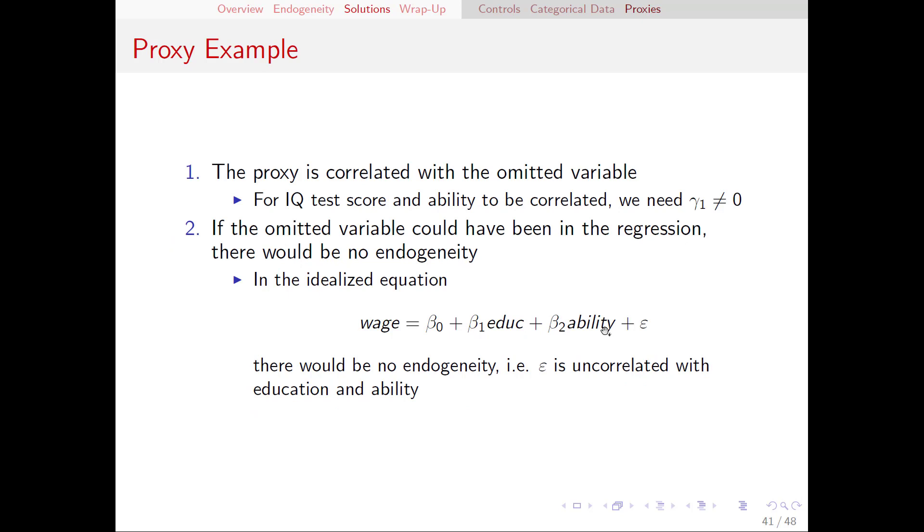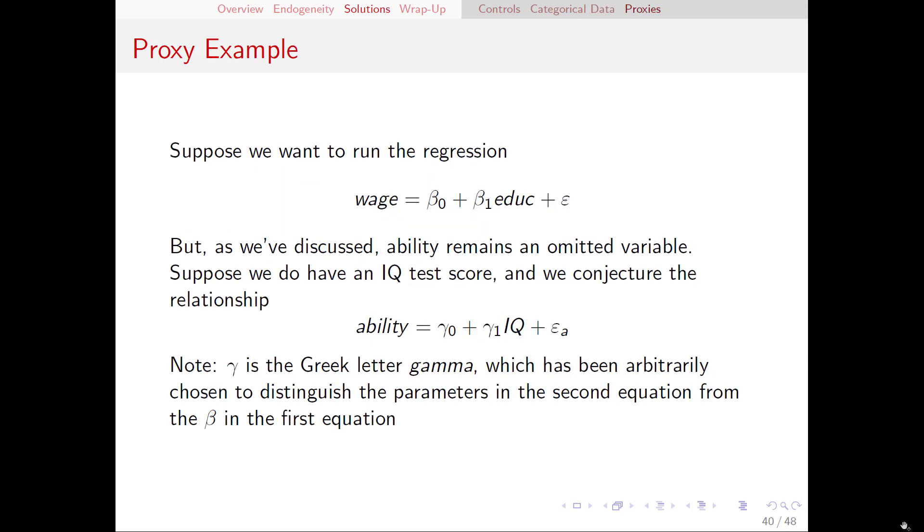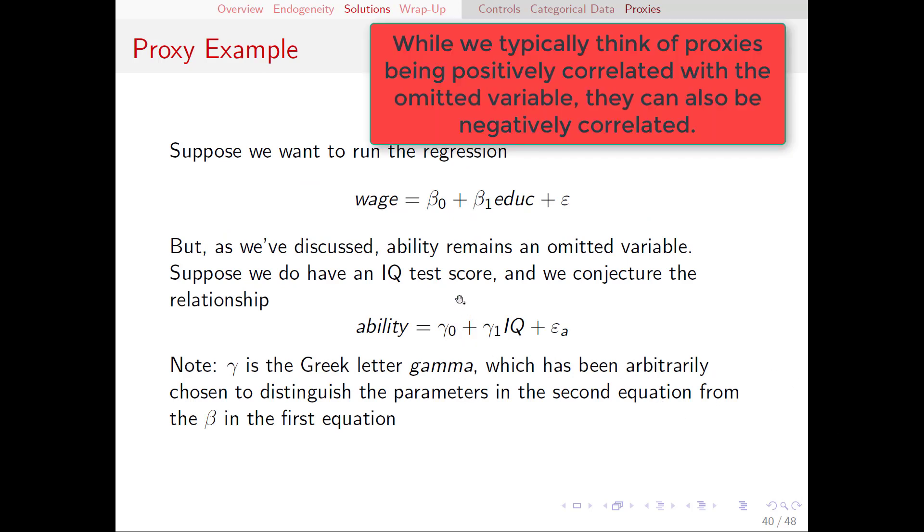Let's use this example to go through our three assumptions about what makes a good proxy. The first one, the proxy is correlated with the omitted variable. Remember that the job of the proxy is to stand in for the omitted variable in the regression. If the proxy is not correlated with the omitted variable, then it can't really do that.